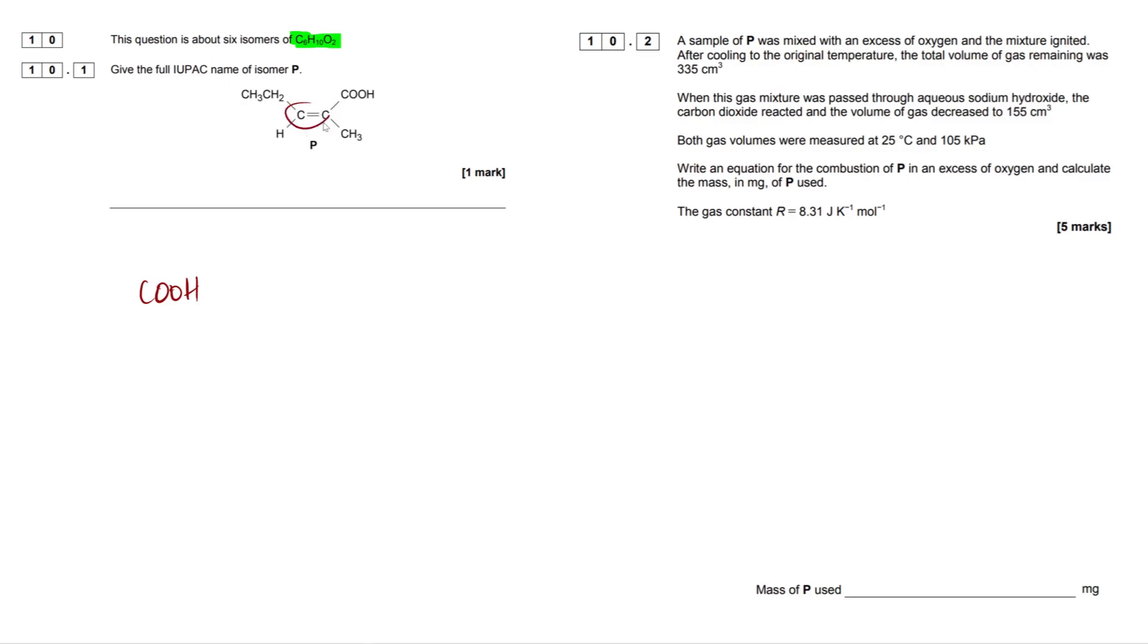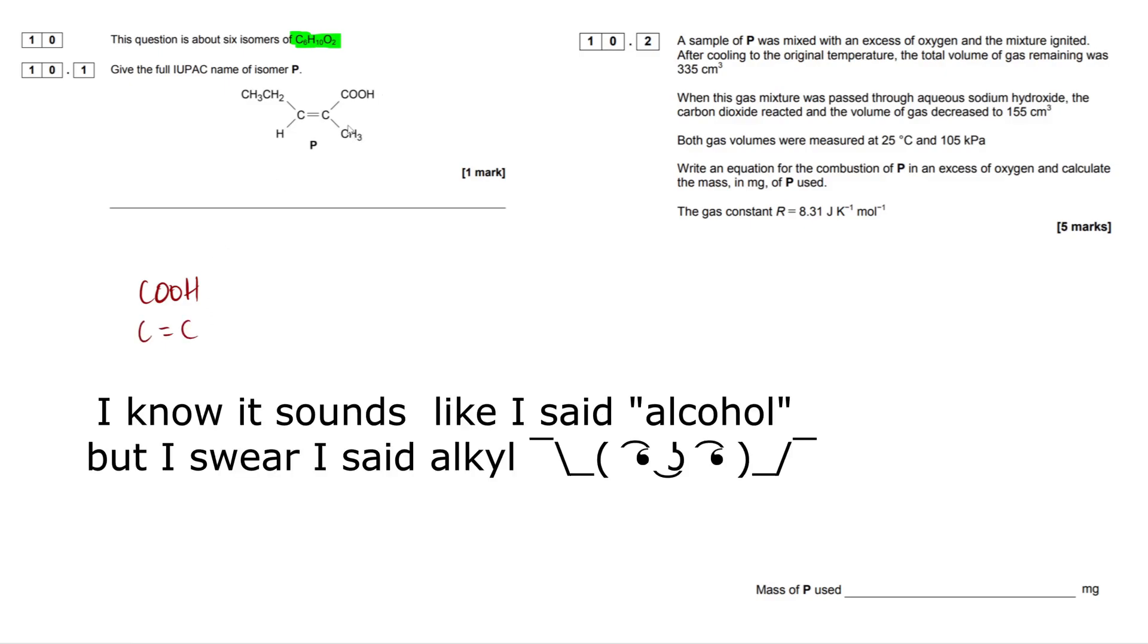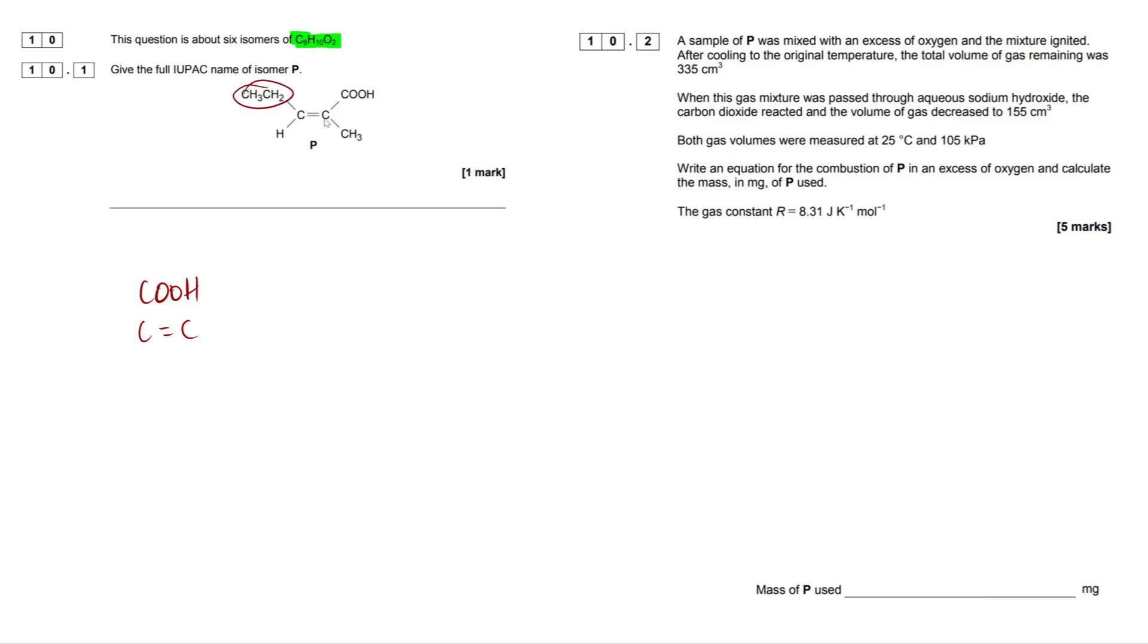Then we've got alkene here, okay? So, our alkene, I'm just going to put a C=C as our alkene, and we also have an alkyl group. So, we have an alkyl group here on this carbon, and we have an alkyl group here. So, I'm just going to put alkyl. Another word of thinking about alkyl is just an alkane, okay?